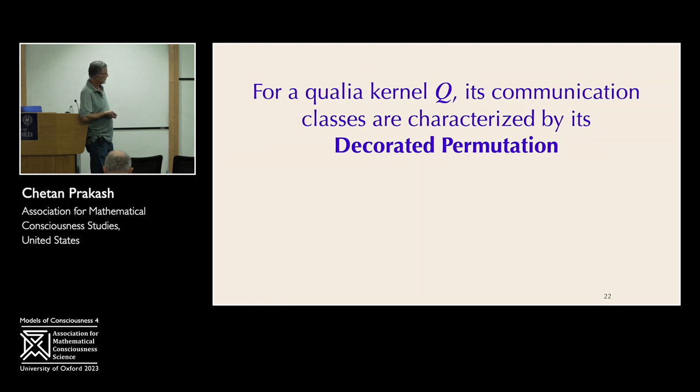So for the qualia kernel Q, its communicating classes, it turns out, are characterized by the same decorated permutations that characterize physical scattering processes. By same, I just mean the same definition or the same kind of entity. I don't mean that they're equal. That's something we have to find.